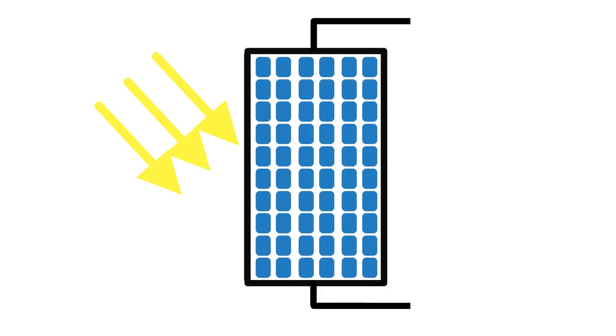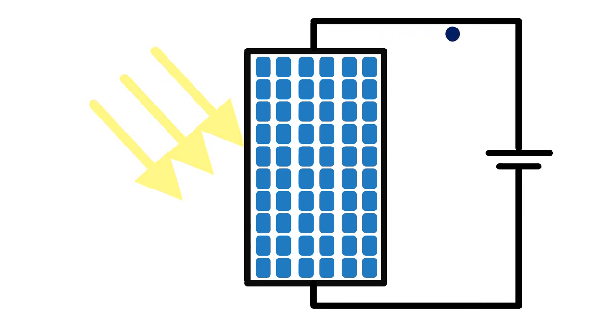When light hits the solar panel, electricity is generated. The more light that hits the panel, the more electricity it produces.